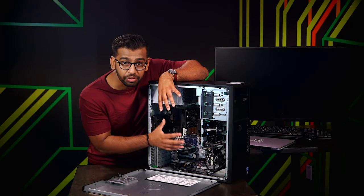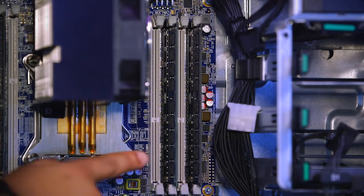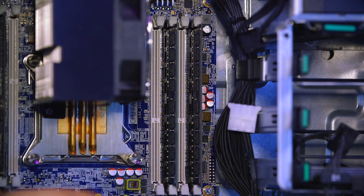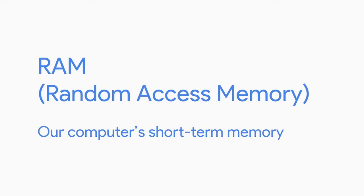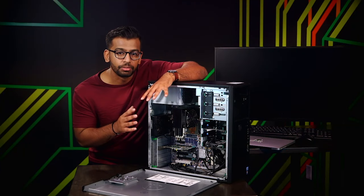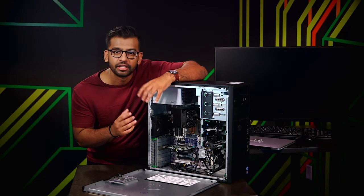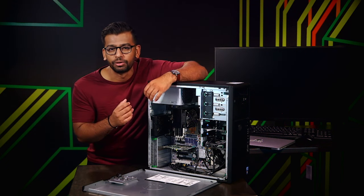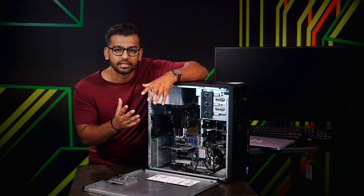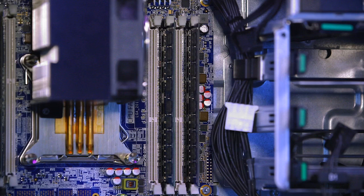The CPU communicates heavily with this component right here — RAM, or Random Access Memory. RAM is our computer's short-term memory. We use this component when we want to store data temporarily. Like, let's say you're typing something into a chat or a piece of text in a word processor — this information is stored in the RAM. We'll cover more details on RAM in a later lesson.